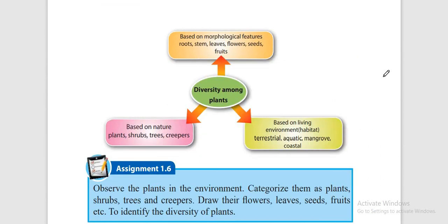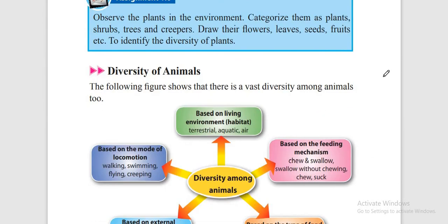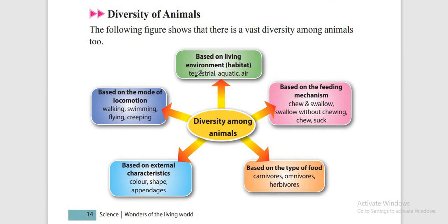Here is a chart for you on diversity among animals. Based on living environment: terrestrial, aquatic and air. Based on feeding mechanism: chewing, swallowing and sucking. Based on type of food: carnivores, omnivores and herbivores. Based on external characteristics: color, shape and appendages.